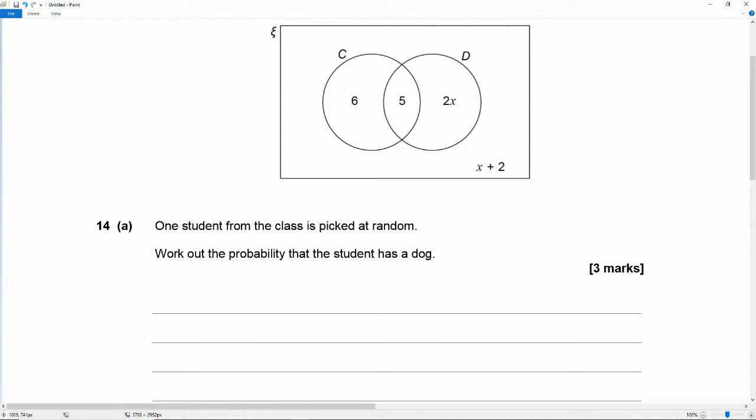So 6 students have a cat. 5 students have both a cat and a dog. And 2x students only have a dog. And there are x plus 2 students that have neither a cat nor a dog.